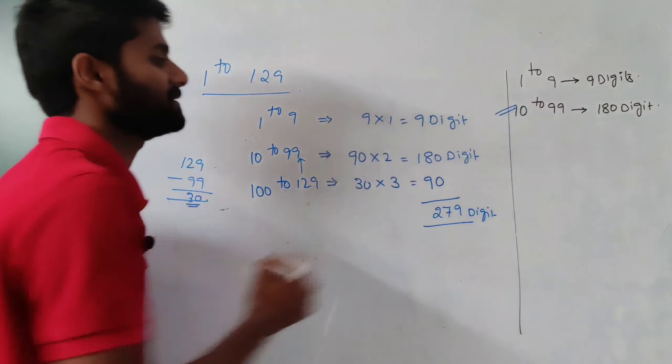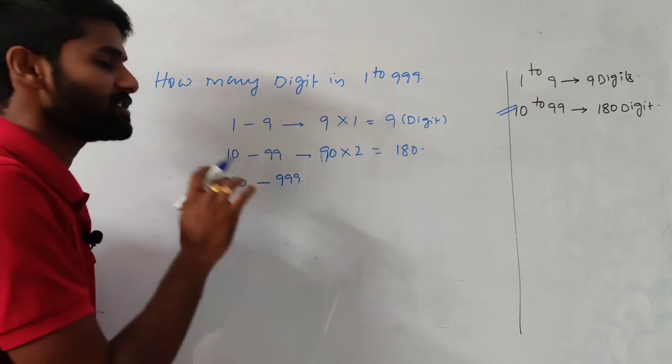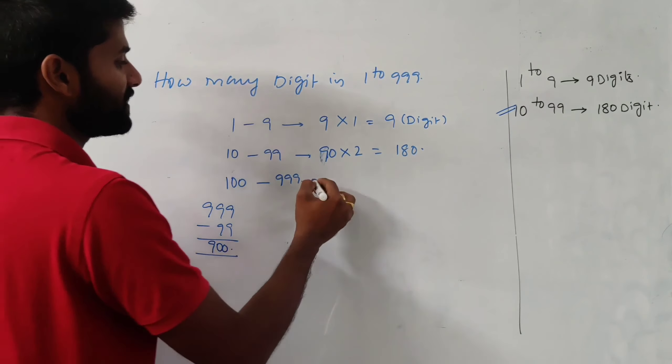Example: from 1 to 99, find the number of digits. From 1 to 9: 9 into 1 equals 9 digits. From 10 to 99: how many two-digit numbers? 99 minus 9 equals 90 numbers, each consisting of two digits, so 90 into 2 equals 180 digits. Total from 1 to 99: 9 plus 180 equals 189 digits.